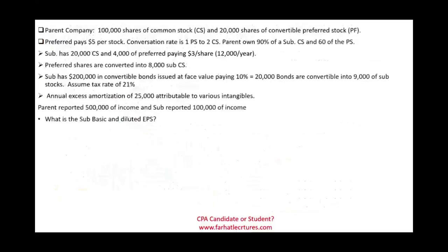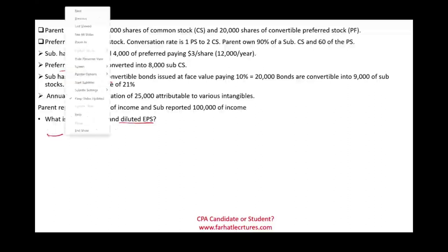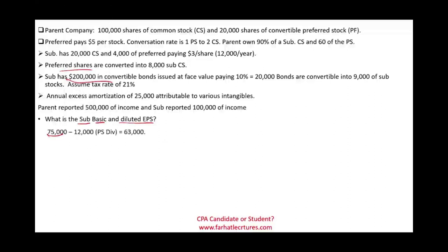Let's compute the sub's basic EPS first, which is straightforward: net income attributed to common shareholders is $75,000 minus $12,000 preferred dividends = $63,000, divided by 20,000 common shares. So $63,000 ÷ $20,000 gives a basic EPS of $3.15.